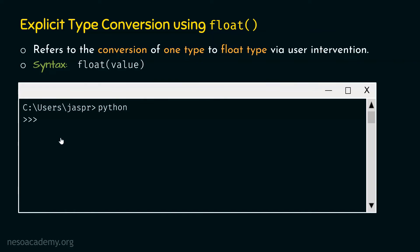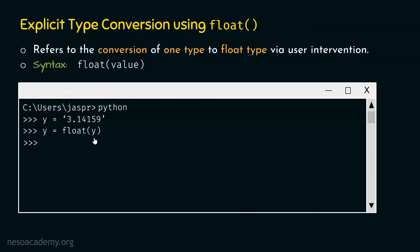Let's see one more example. This time type y = '3.14159' within single quotes. This is a floating point value written within single quotes as a string. Now type y = float(y) to convert this string to float. This example shows that float is capable of converting not only an integer to float, but also a string to float. If we type y, we get 3.14159 on the screen — float has successfully converted the string to a floating point value.